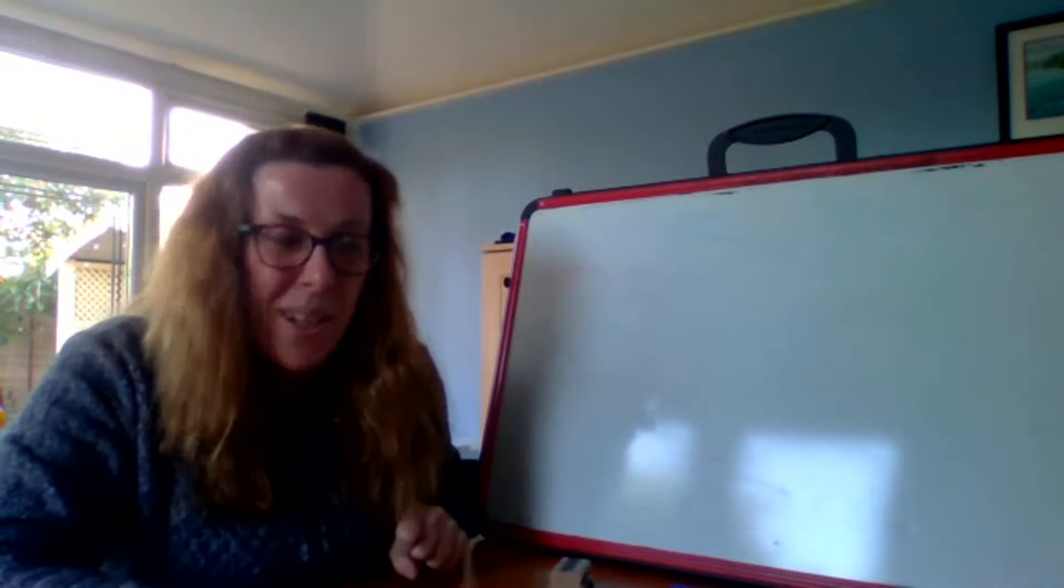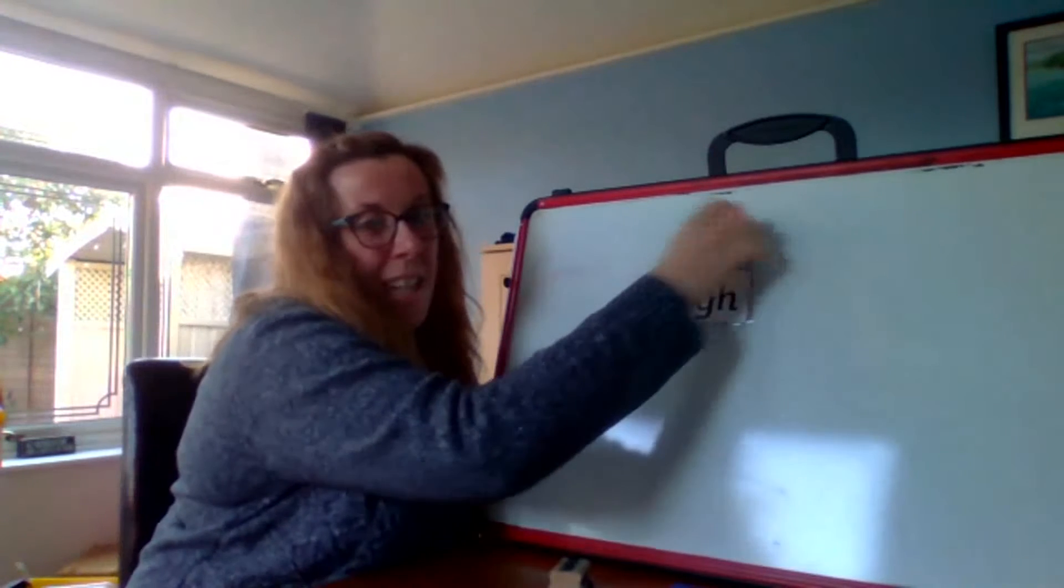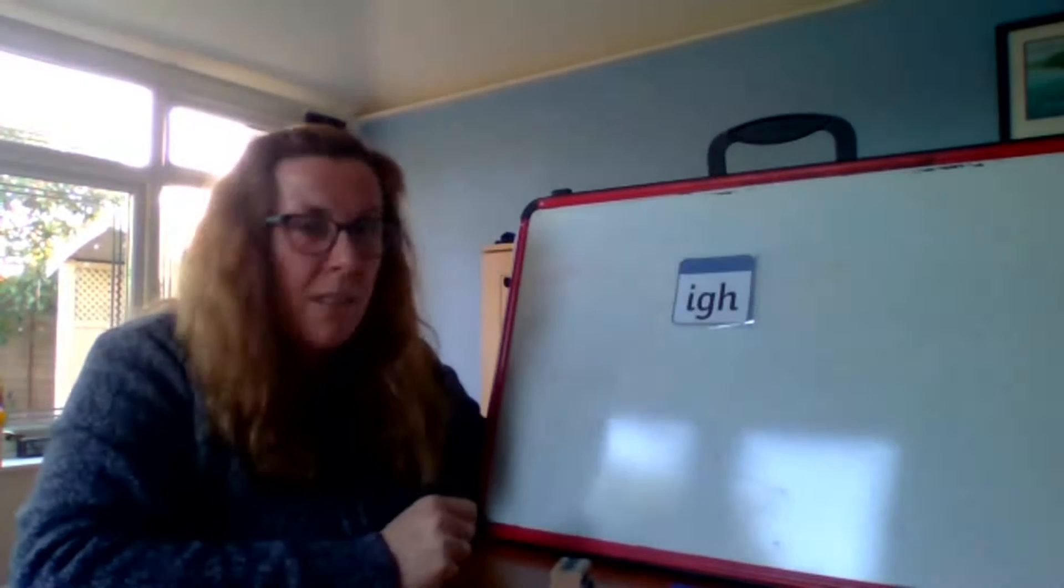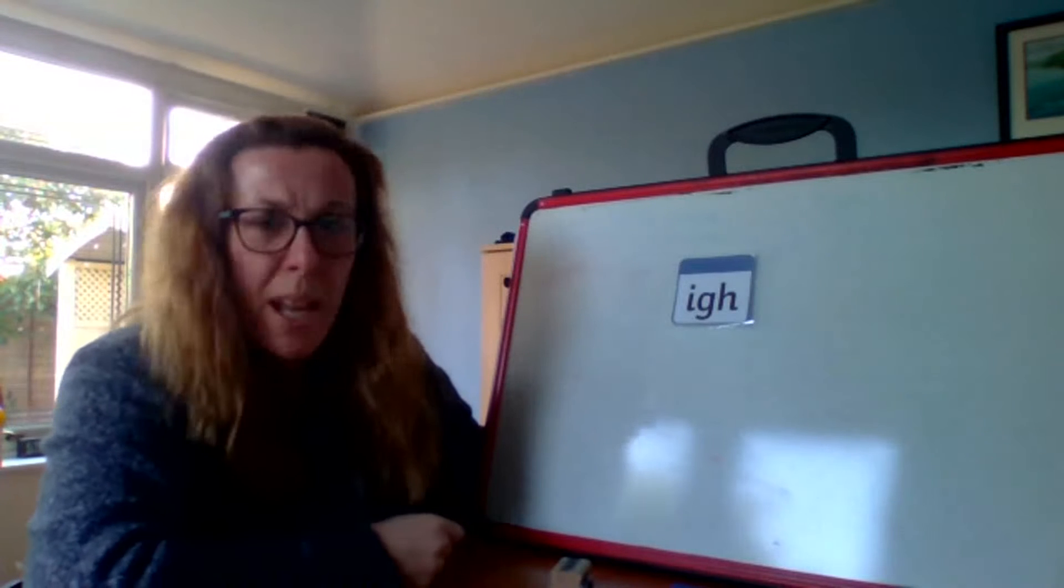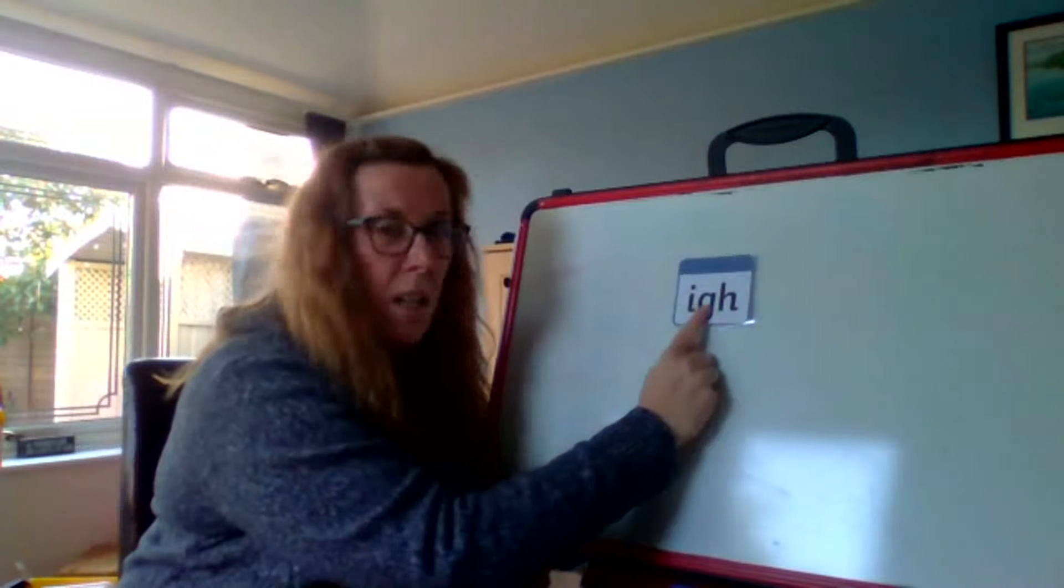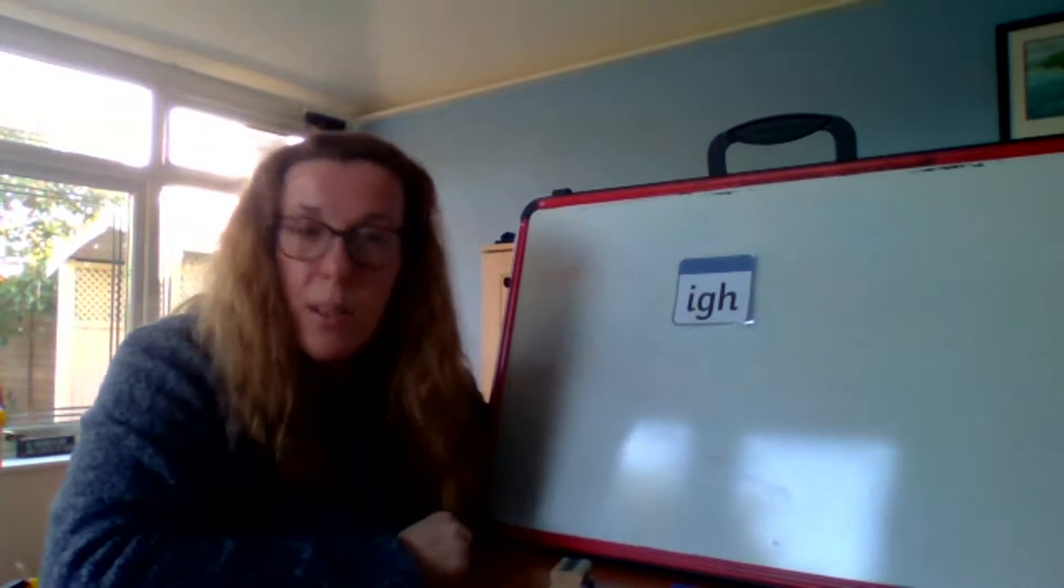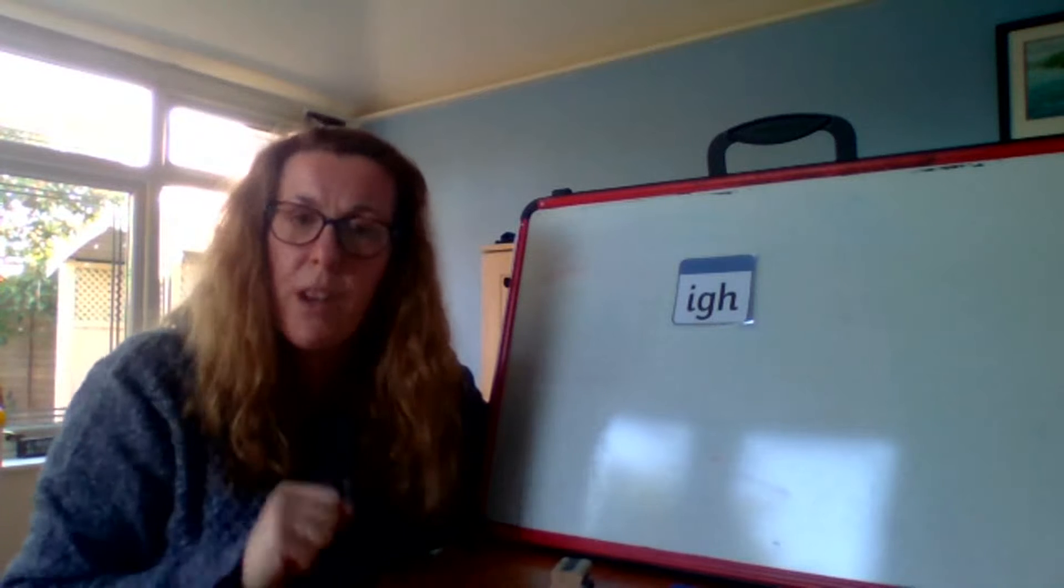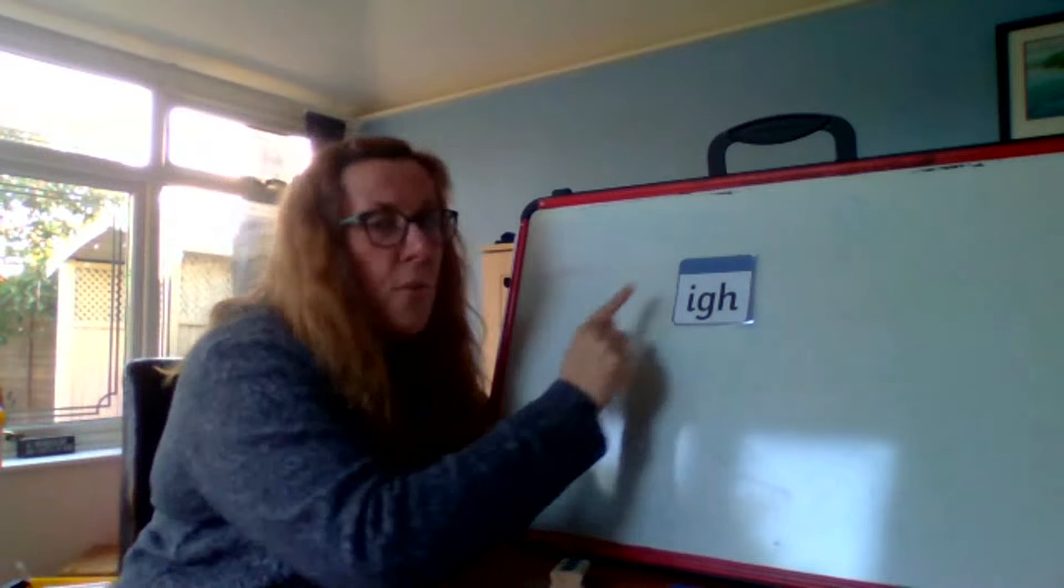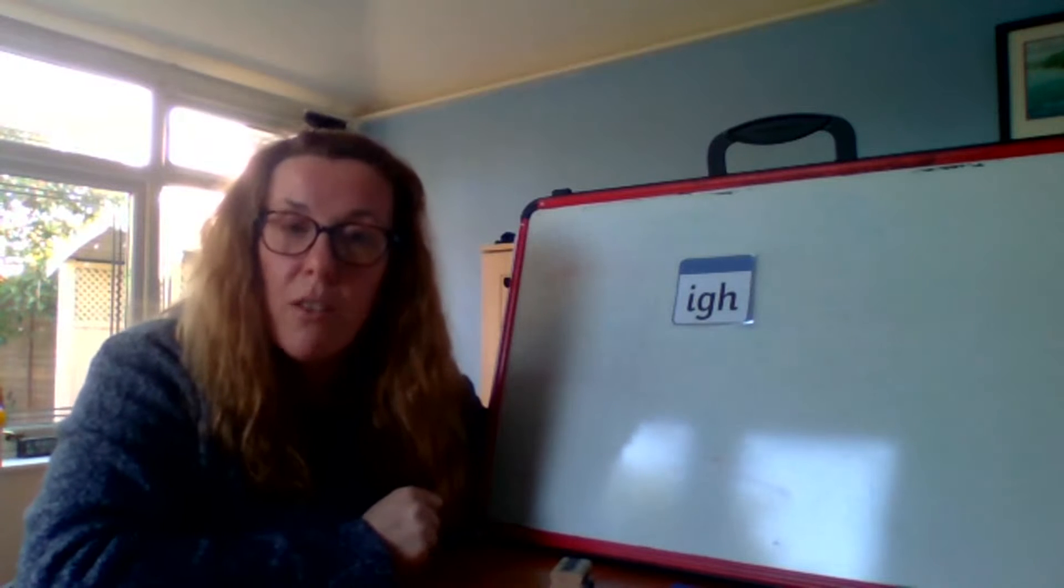So today's phoneme. Today, we are looking at this one. We have got this one. Looks a bit different, doesn't it? How many letters does this have? Shall we count them? One, two, three. There's three letters. So it's not a digraph, because digraphs are two letters that make one phoneme. This is three letters that make one phoneme. It is called a trigraph.